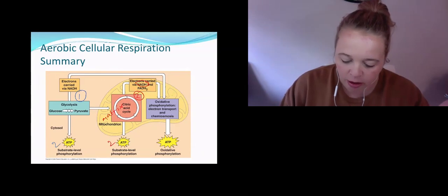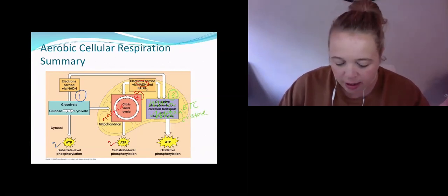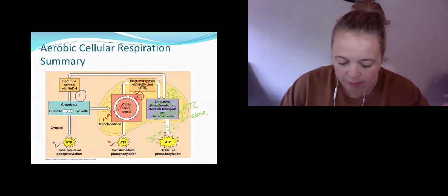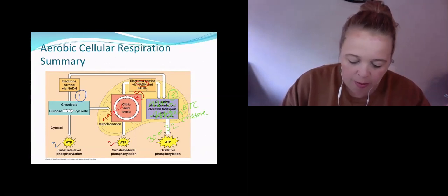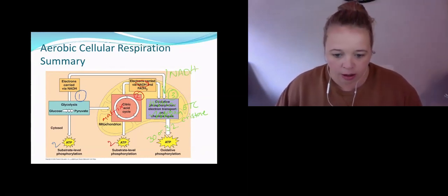Our final stage over here, we're just going to call it the electron transport chain or the ETC. This is happening in the cristae or on the inner mitochondrial membrane. And this one, we make lots and lots—we make 30 or 32 ATP and we use up all of that NADH that we made in those previous reactions. So that's just a really quick summary of our three different stages.